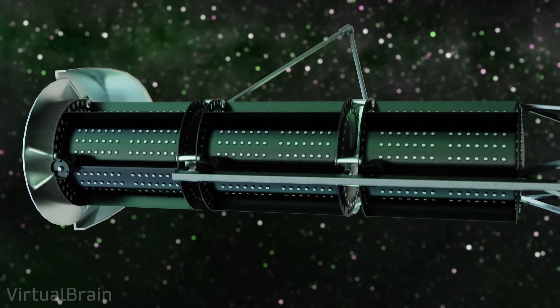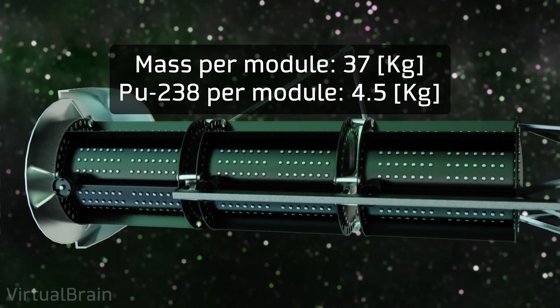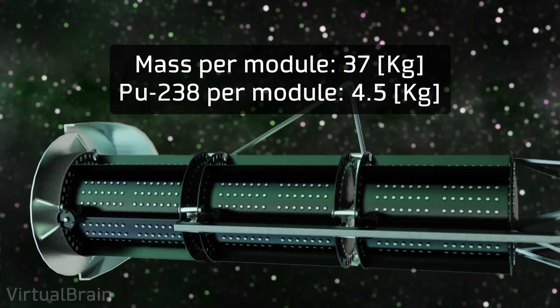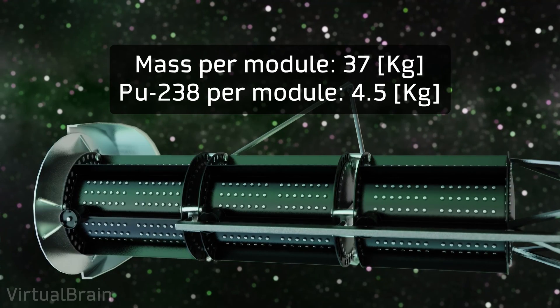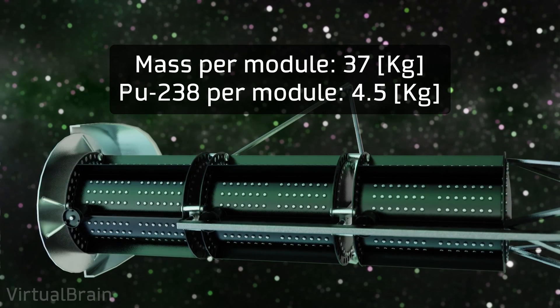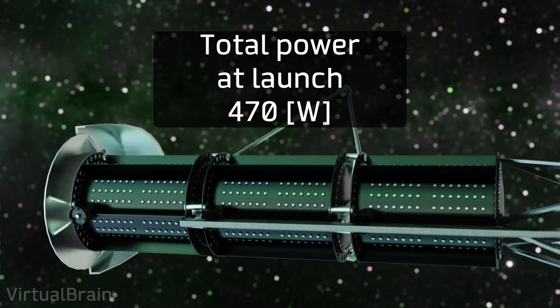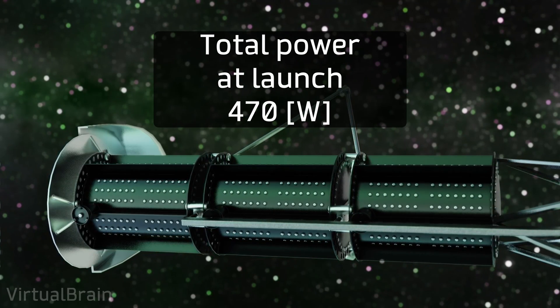The Voyager probes have three radioisotope thermoelectric generators, each with a mass of 37 kg, of which 4.5 kg were plutonium-238 at launch, and which together were capable of generating a power of 470 watts.